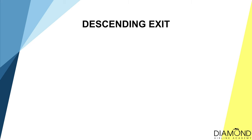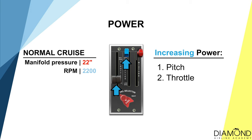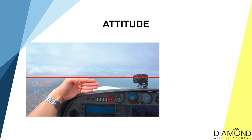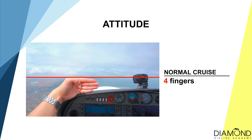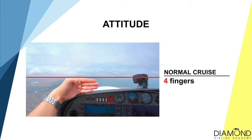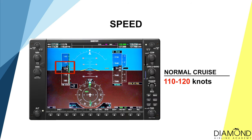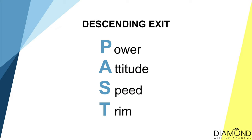The exit cycle for descent is P, A, S, T. P is Power — increase power to normal cruise setting: 22 inches of manifold pressure and 2200 RPM. A is Attitude — four fingers for normal cruise. S is Speed — approximately 110 to 120 knots. T is Trim — trim until hands-off state. Those are the work cycles for climbing and descending turns.